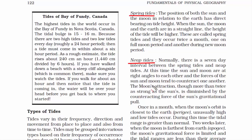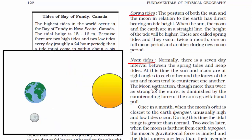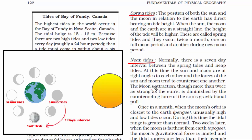The second type is neap tides, which occur when the sun and moon are at right angles to each other. In this position, the sun diminishes the moon's gravitational pull on earth, and the combined forces tend to counteract one another, creating low tides — these are called neap tides. There is a 7-day interval between spring tides and neap tides. Spring tides occur when the moon is at the new moon and full moon positions, while neap tides occur when the moon is at the quarter positions.